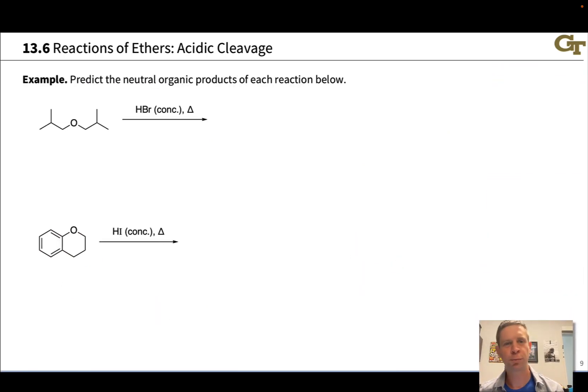In this practice problem, we're going to predict the neutral organic products when these ethers are treated with concentrated HBr and HI and heat. So the idea in general is that we're going to protonate the ether oxygen and use the conjugate base of the acid as a nucleophile. So we can imagine, for example, in this dialkyl ether that the two C-O bonds are going to be cleaved. We're going to add two protons to the ether oxygen to create H2O. And we're going to add two bromides to the carbons linked to oxygen to create two alkyl halide molecules, which in this case happen to be the same. And so we're going to get isobutyl bromide out of both sides of this ether and it looks like we're done.